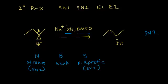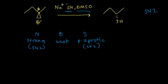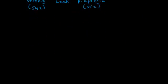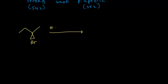Let's look at another example using the same starting reactant with a chirality center. This time we react the molecule with formic acid, which will be both our solvent and our nucleophile. We're going to heat up this reaction.